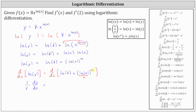The derivative of u squared with respect to x equals 2 times u times u prime. In our case this gives 2 times natural log x times the derivative of natural log x with respect to x, which is 1 divided by x. Simplifying, we have 1 divided by y times dy/dx equals 2 natural log x divided by x.